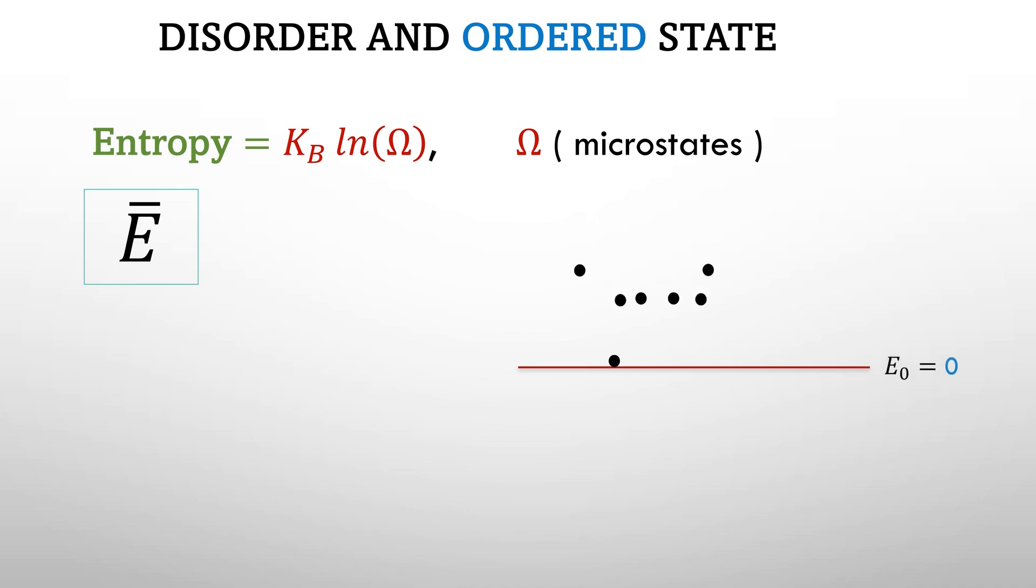When temperature is zero Kelvin, average energy of the system is zero, where only one energy state is occupied, which is lowest energy state. So in the case of zero Kelvin, the system is perfectly ordered and the entropy is zero.